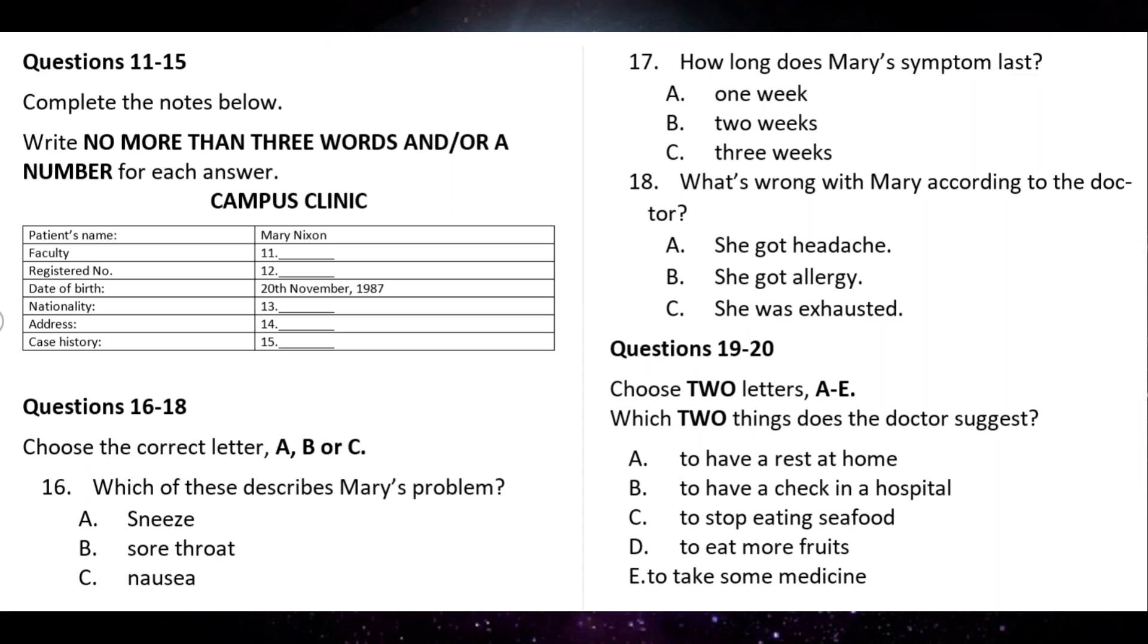Right. Now let's get some of your medical background. OK. Have you ever had any serious illnesses or accidents? I got gastritis when I was in middle school. Did you have an operation? No. I just took medicine and had some injections. Anything else? No, nothing. Now, look at questions 16 to 20. Now, listen to the tape and answer the questions 16 to 20.